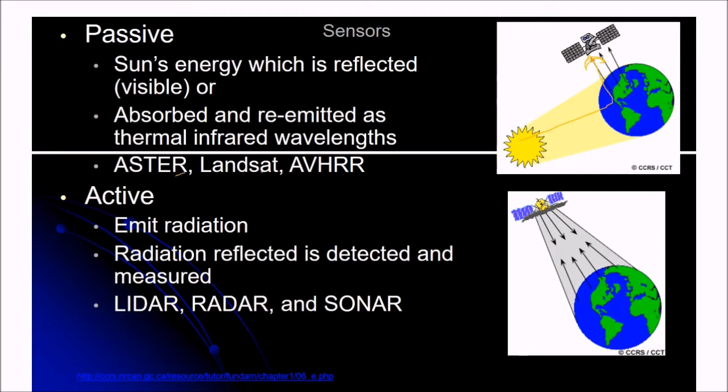For example, ASTER, Landsat and AVHRR are the examples. In the active scenario, the satellite sends or emits the radiation. The radiation which is reflected back is detected and measured. For example, LIDAR and SONAR are active sensors.